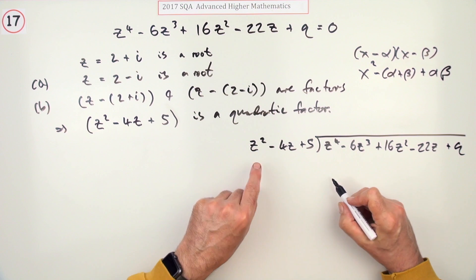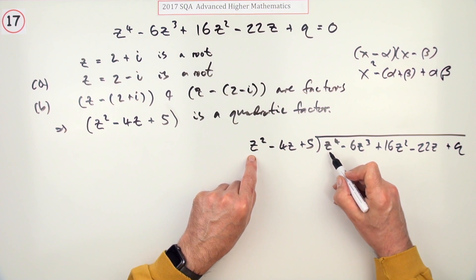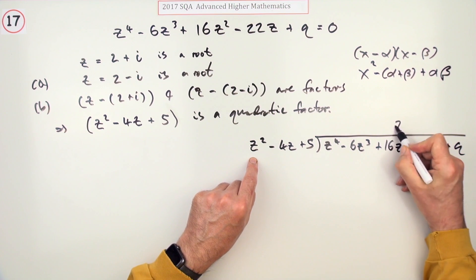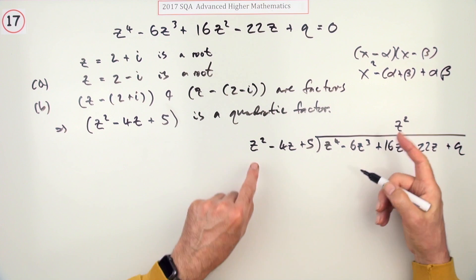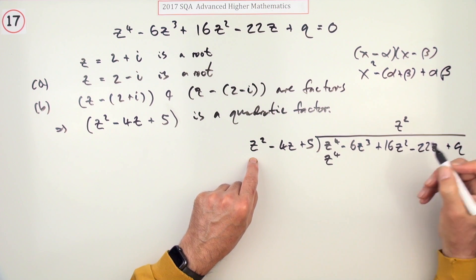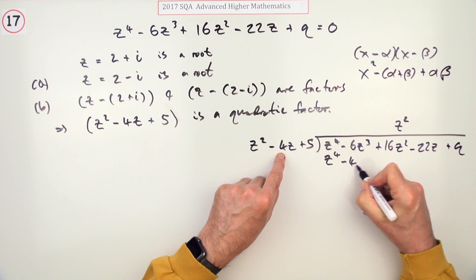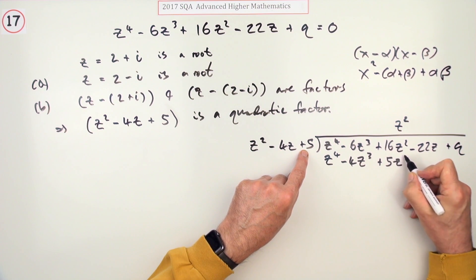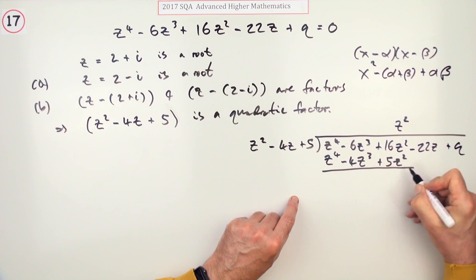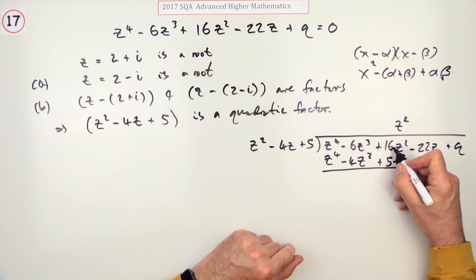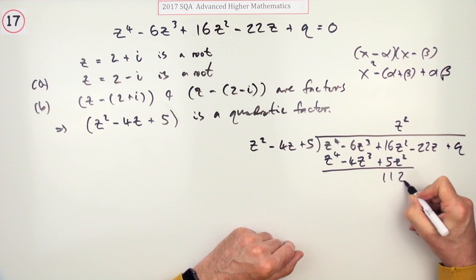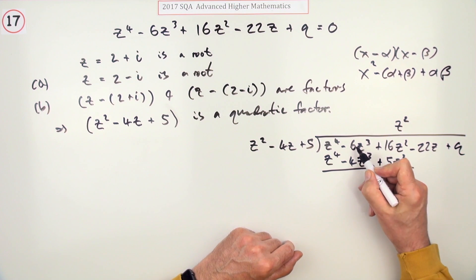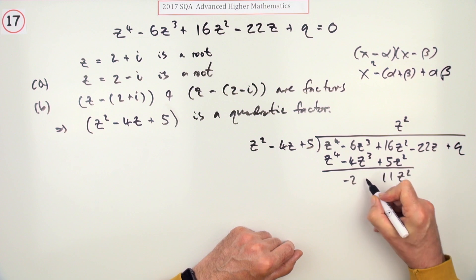Start: z² to make z⁴ must be multiplied by z². Multiply out to see what's left over: z⁴ - 4z³ + 5z². Subtract it: -6z³ + 11z².